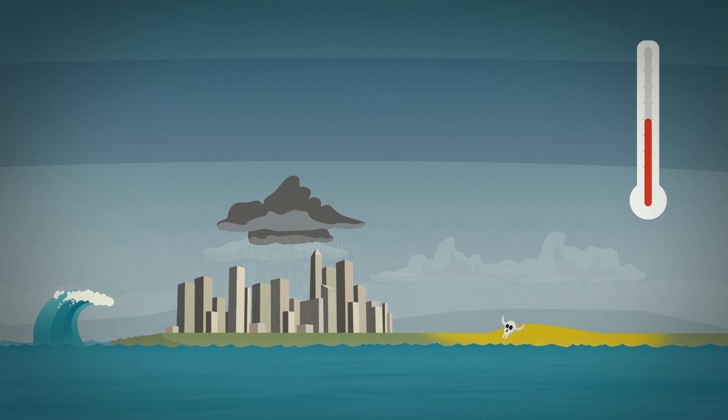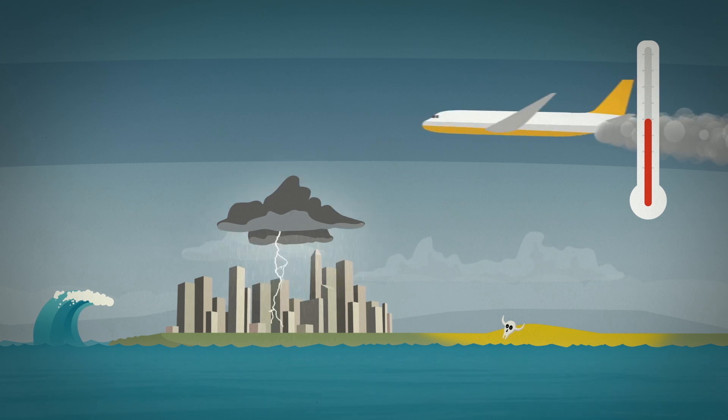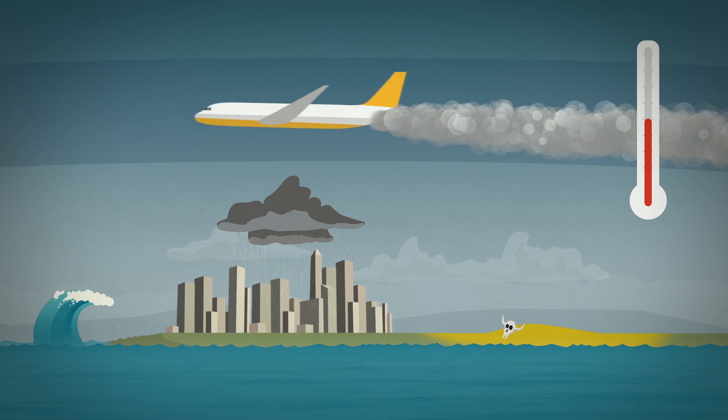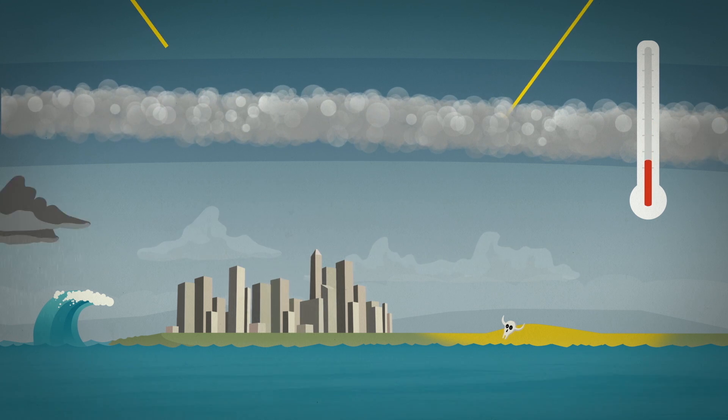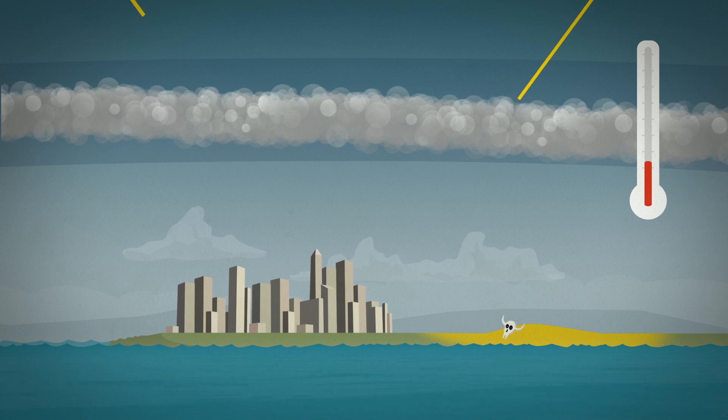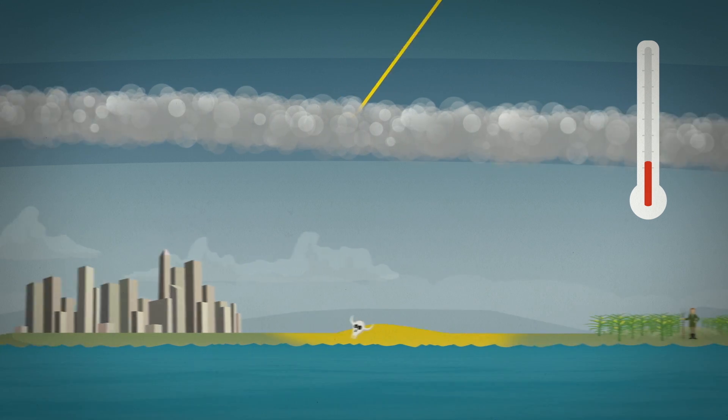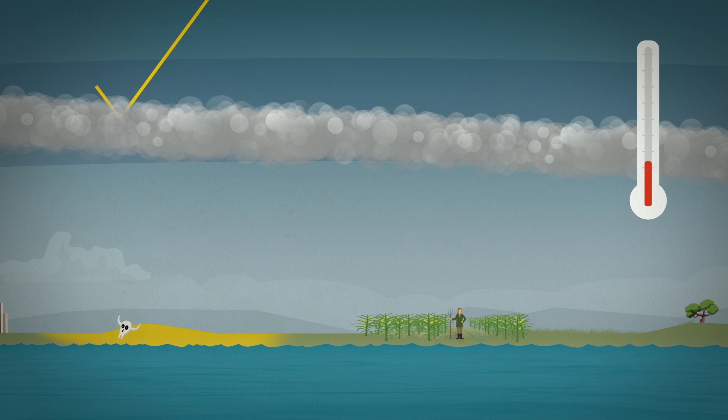But could we actually balance increased greenhouse gases simply by reflecting sunlight? Well, we might be able to stabilize the global temperature on average. But reflecting sunlight does not have the same effects as reducing greenhouse gases. No one can tell exactly what the consequences would be.